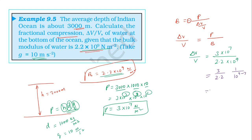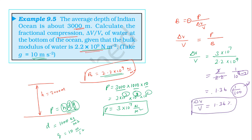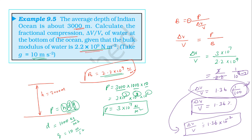Simplifying: 3 divided by 2.2 is approximately 1.36, and 10 power 9 minus 7 gives 10 power minus 2, which equals 1 by 100. So the fractional compression delta V by V is approximately 1.36 into 10 power minus 2, or about 1.36 percentage.